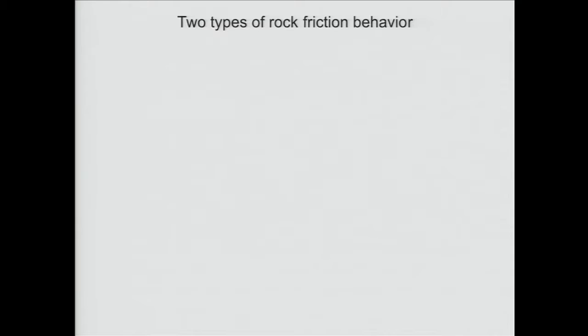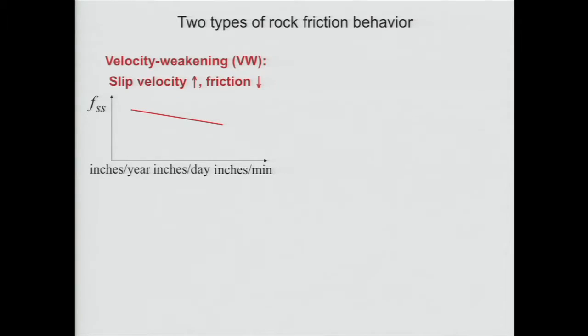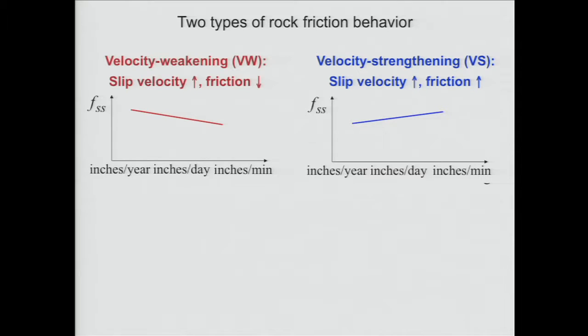As we move along, what do these experiments discover? Basically, they find there are two types of rock friction behavior. One is velocity weakening friction, where the friction coefficient in a steady-state sense basically decreases with velocity. We use a logarithmic scale from inches per year to inches per day to inches per minute, and on that scale it's almost like a straight line. As the slip velocity increases, friction decreases, so the fault weakens — hence the name velocity weakening.